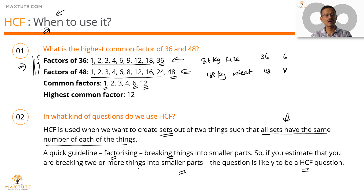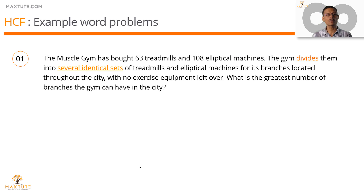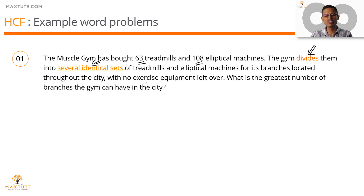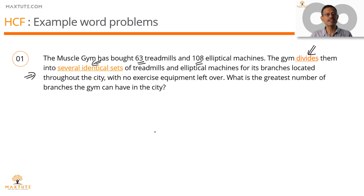Let's look at a couple of examples. Here is the first word problem: The Muscle Gym has bought 63 treadmills and 108 elliptical machines. The gym divides — and that's the key word, breaking into smaller pieces — divides them into several identical sets for its branches throughout the city, with no exercise equipment left over. What is the greatest number of branches the gym can have? The moment you read this, if something is being divided into identical sets, this is likely a HCF question.